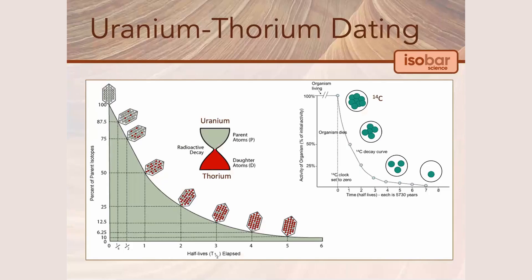Until that state of equilibrium is reached, the measurement of the ratio between uranium-234 and thorium-230 allows us to calculate the time that has passed since formation of the sample initiated, thus giving us the age of the sample. This differs from radiocarbon dating, as you can see depicted in the plot in the upper right. In radiocarbon dating, the amount of 14C reduces over time, producing an inversely proportional relationship between 14C quantity and the age of the sample.